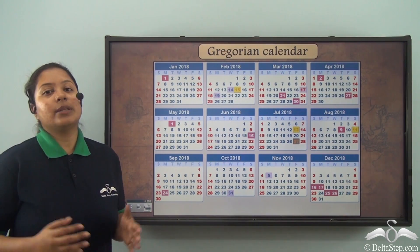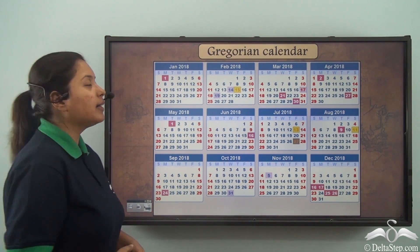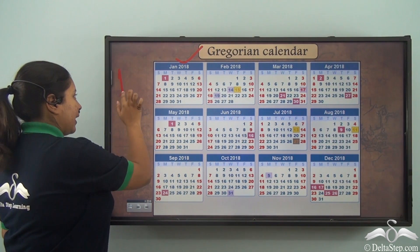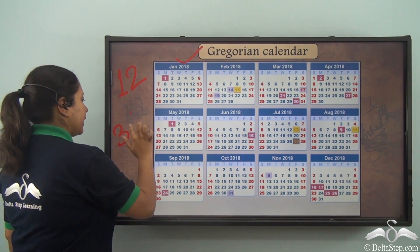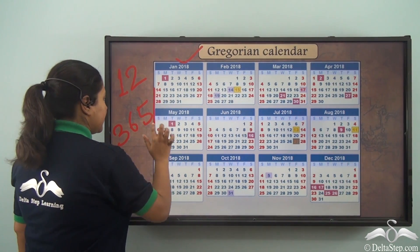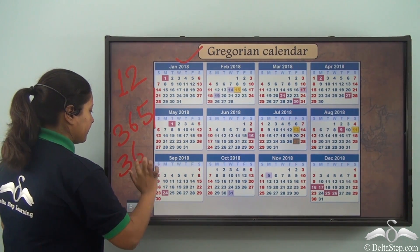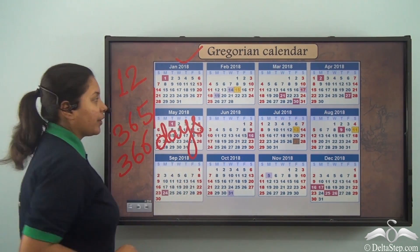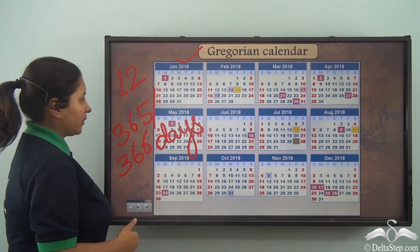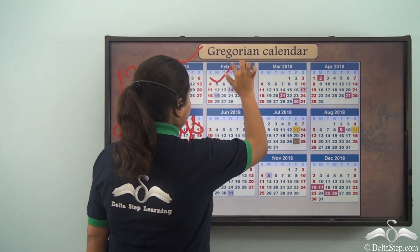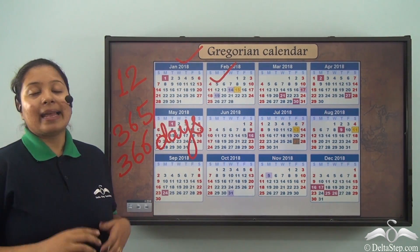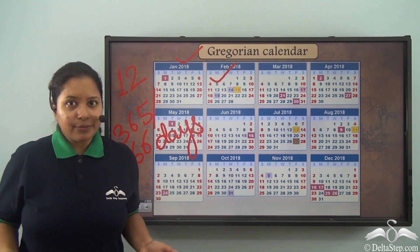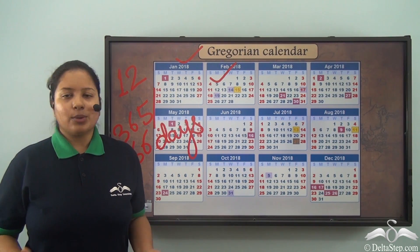We have learnt today about the most widely used calendar, which is the Gregorian calendar. It has got 12 months and 365 or 366 days depending on the type of year. The extra day is added in the month of February. This calendar is very, very useful for us to note important events, dates and the timeline.